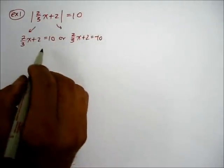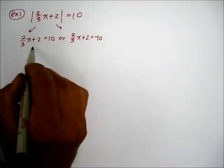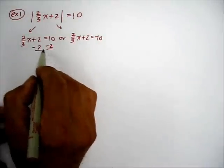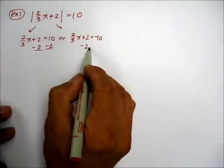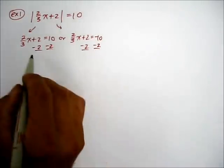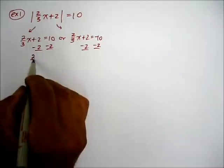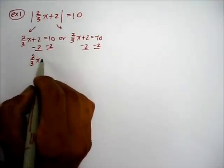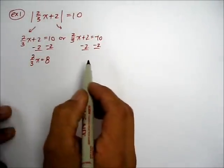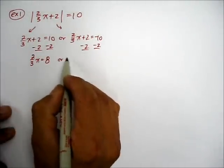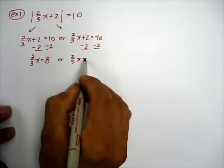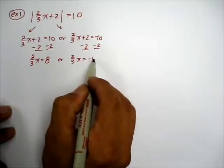We're going to solve this equation by subtracting 2 from both sides of the equation simultaneously. So we have 2/3x = 8, or 2/3x = -12.